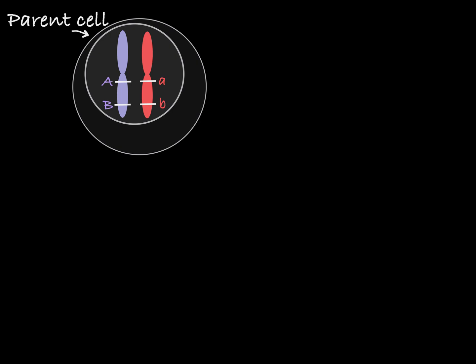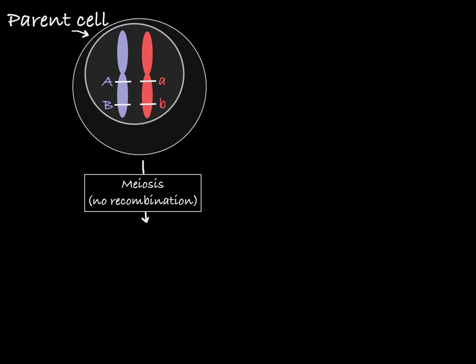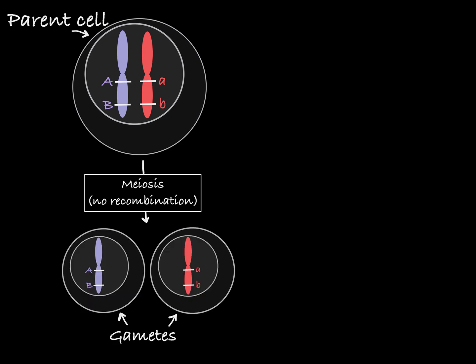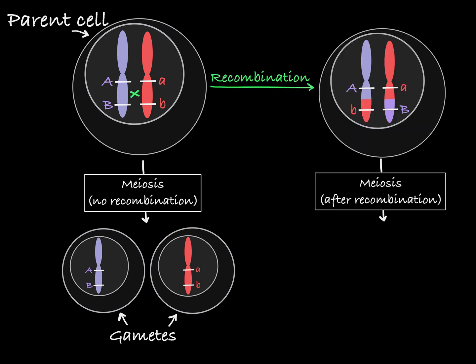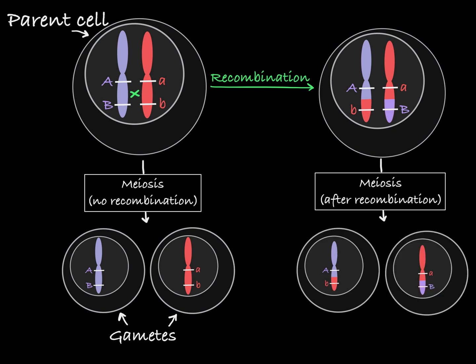So let's say we have this parent genome, containing one chromosome that contains the dominant alleles for genes A and B, and a homologous chromosome containing the recessive alleles for genes A and B. If recombination does not occur, the gametes produced in meiosis will either look like this or like this. If recombination does occur, then you will see gametes that look like this and like this.